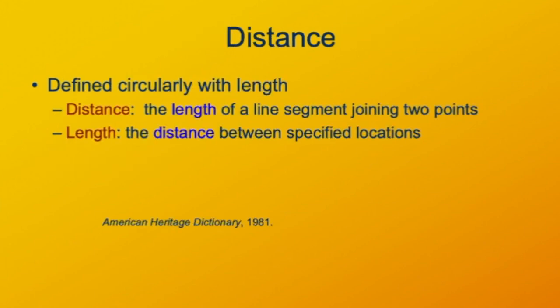I claim these quantities can't be defined in terms of other things. Let's check out that claim. The dictionary definition of distance is that it is a length. But then length is defined as a distance. So to define one, you need the other. That's not to say that the concept is invalid — far from that. It's just that it's so fundamental that it doesn't depend on anything else.